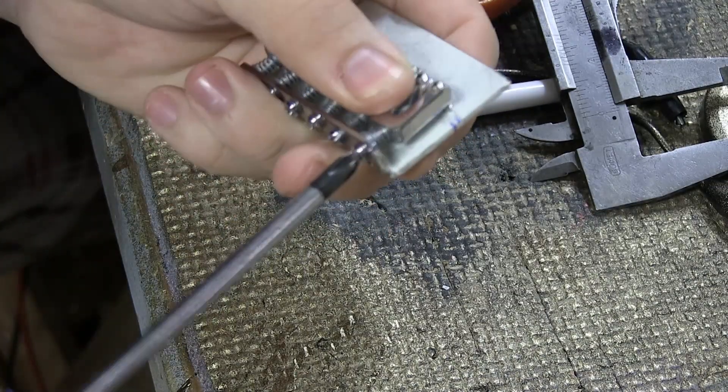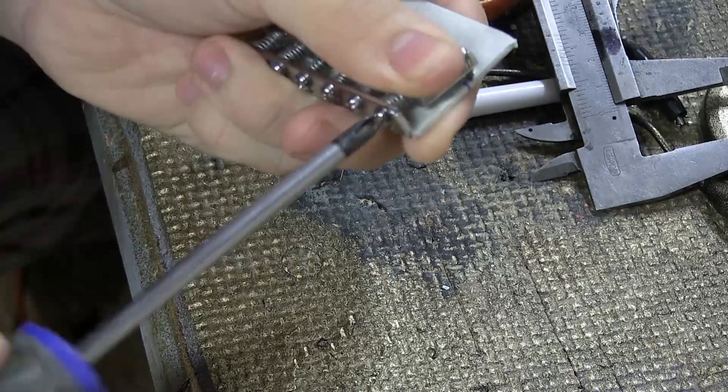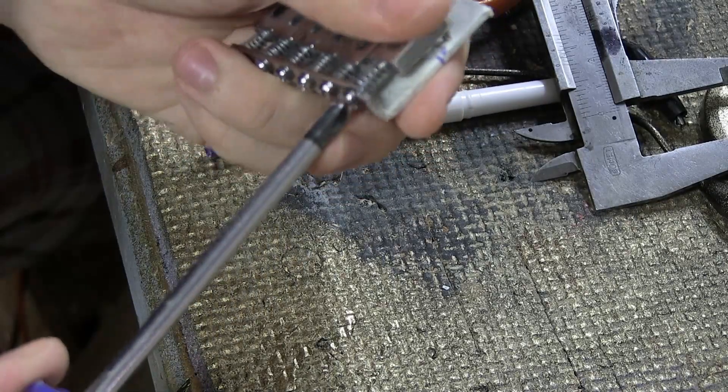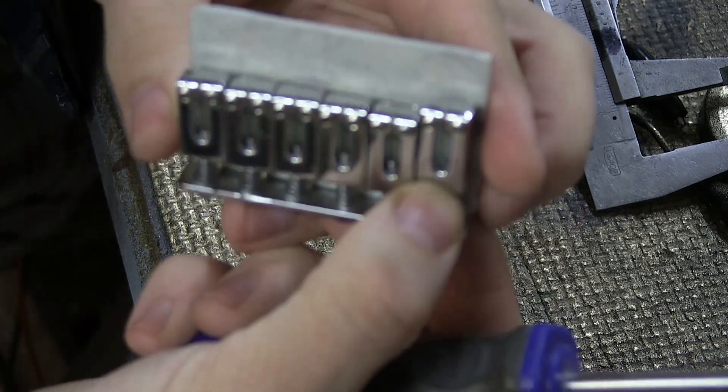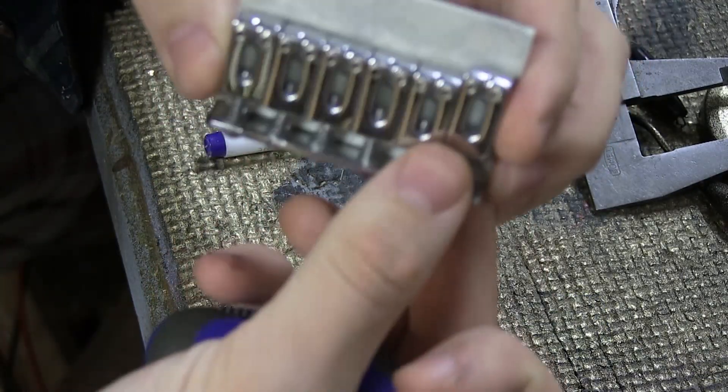Then you want to take a screwdriver and you want to pull the bridge forward as far as it can go and still be secure inside. If you look at for example this bridge here, you can see that the screw sticks out into the saddle a little bit.